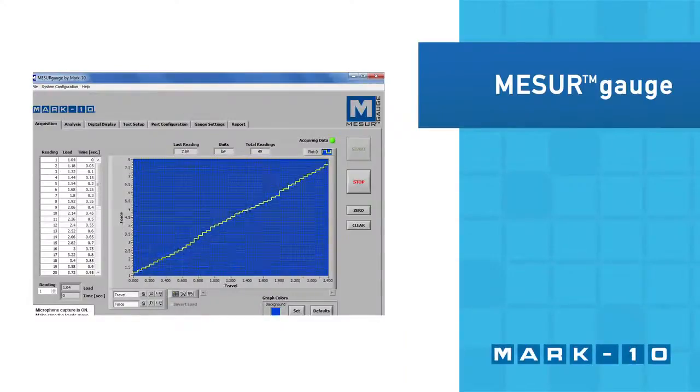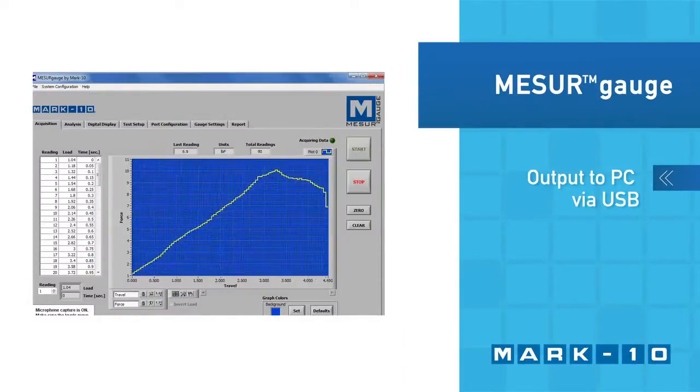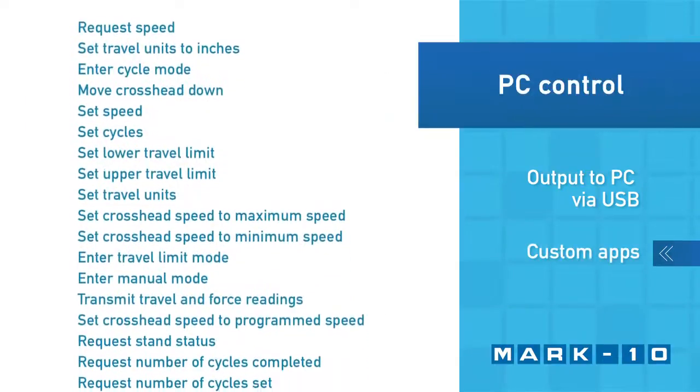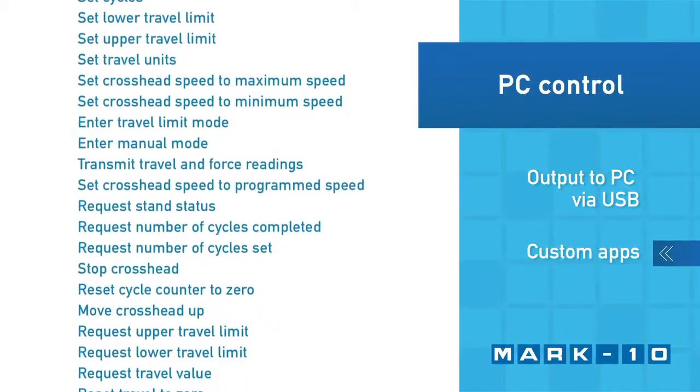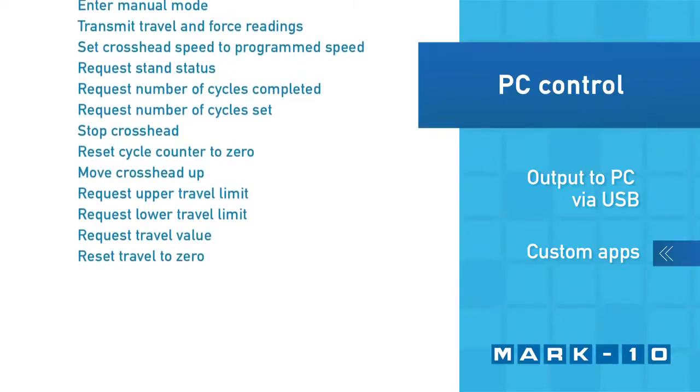Force and distance data can be output to a PC via USB for graphing and reporting. Custom applications can also be developed utilizing the ESM303's ASCII command set.